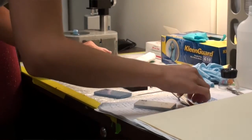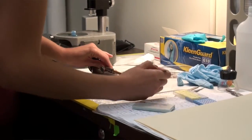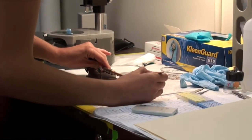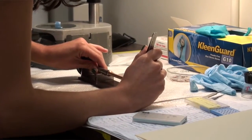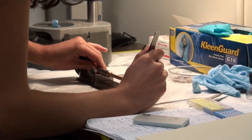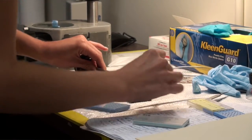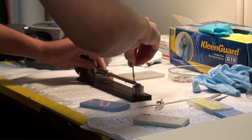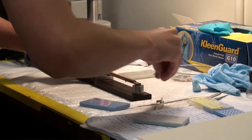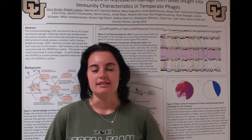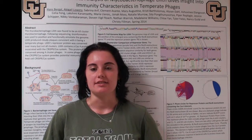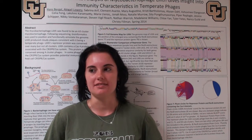Every year we find new phages — we haven't gotten a repeat since the program started. We did DNA isolations and ran the DNA on a gel to look at the size of our genomes. We also did electron microscopy to see the actual phage, because they're very, very small.